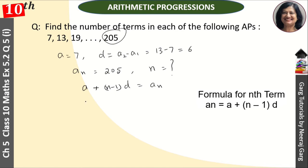Where we put a equals 7 plus n minus 1, and d is 6. And an we have given as 205.